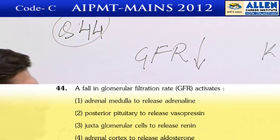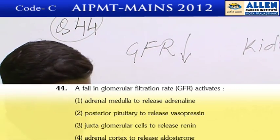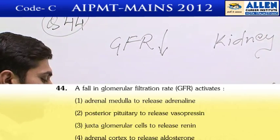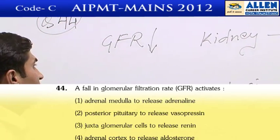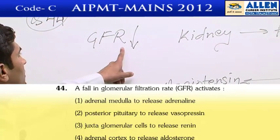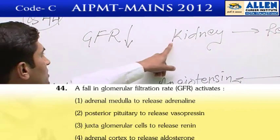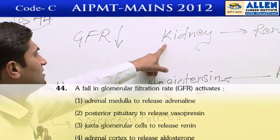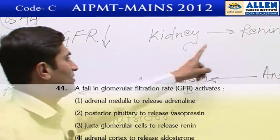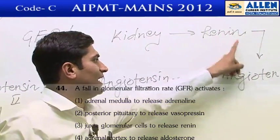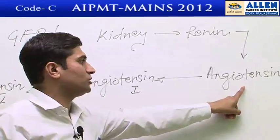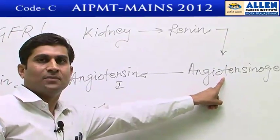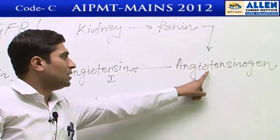Question number 44: when GFR falls, what will happen? When GFR falls, the kidney's JG cells secrete renin, and this renin activates angiotensinogen which is present in the blood in inactive form.